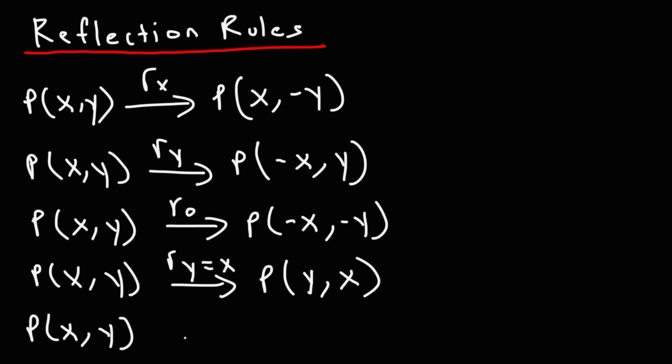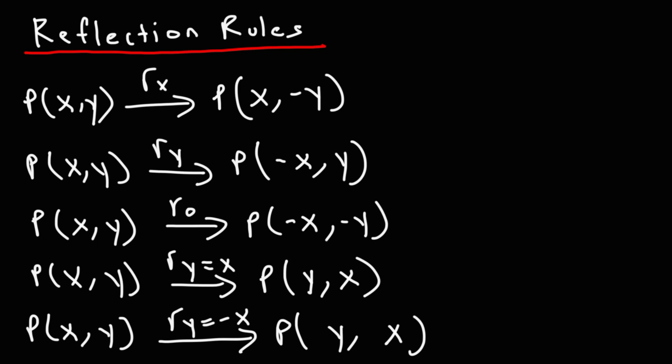Now if we wish to reflect a point across the line y equals negative x, we switch x and y like before, but we also negate each variable. So rather than (positive y, positive x) it becomes (negative y, negative x). Those are some reflection rules you want to be familiar with — feel free to write them down in your notes.